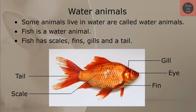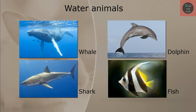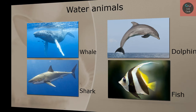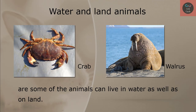Water animals. Some animals live in water and are called water animals. Fish is a water animal. Fish has scales, fins, gills and a tail. Whale, dolphin, shark, and fish are some of the water animals. Water and land animals. Some animals can live both in water and on land. Frog, turtle, crab, and walrus are some animals that can live in water as well as on land.